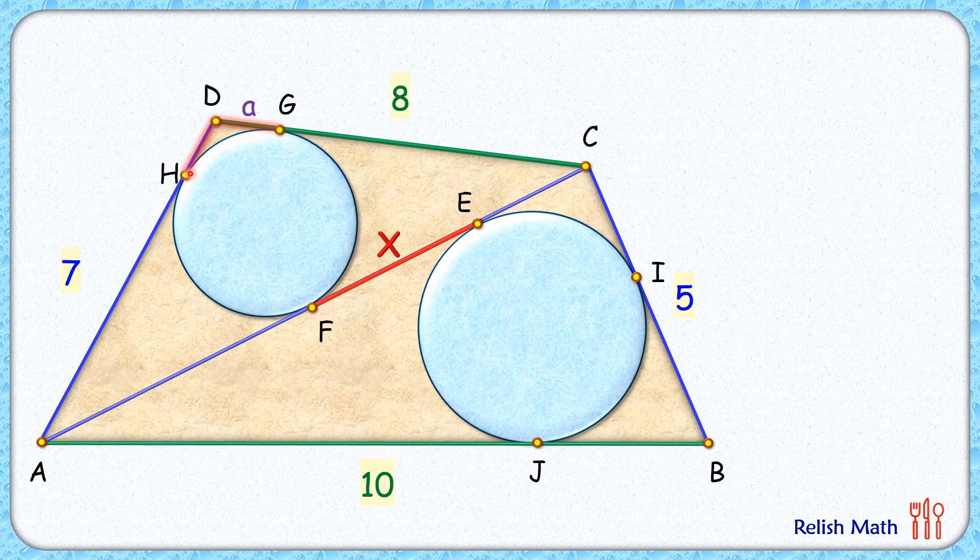Now full length AD is 7 centimeters, thus length AH will be 7 minus a centimeters. From external point A, two tangents are drawn, and thus the length AF will also be 7 minus a centimeters.